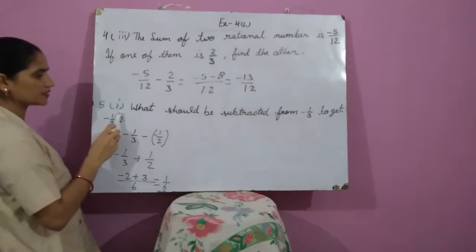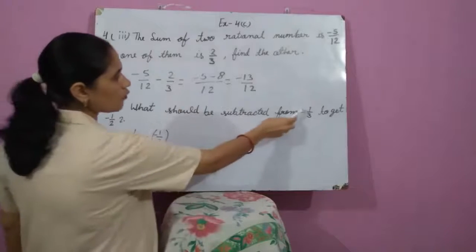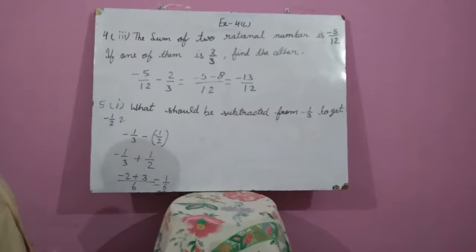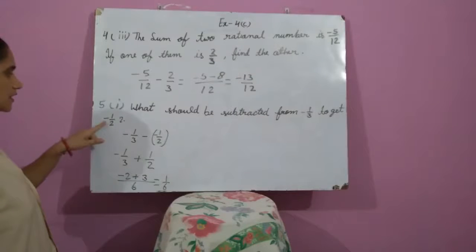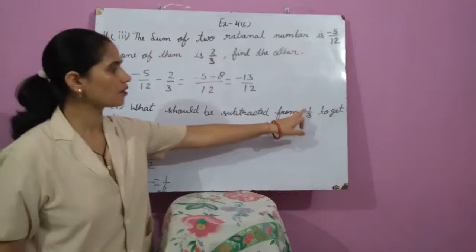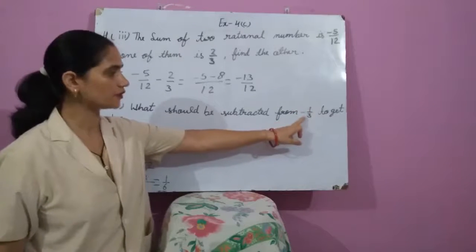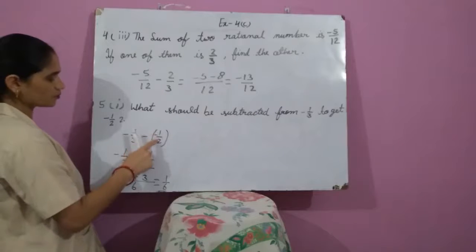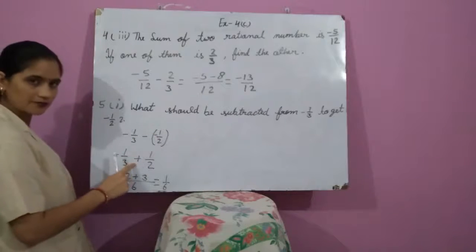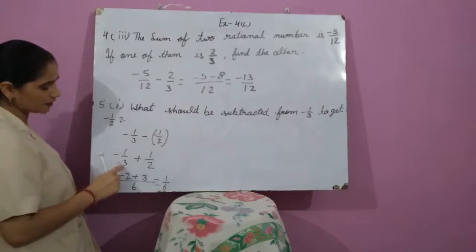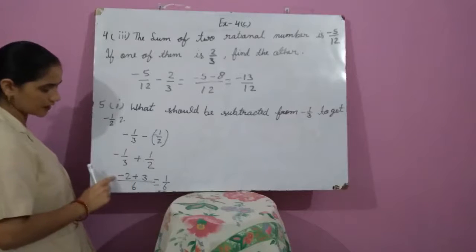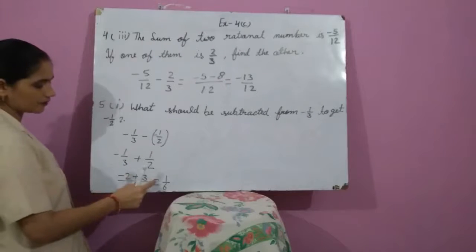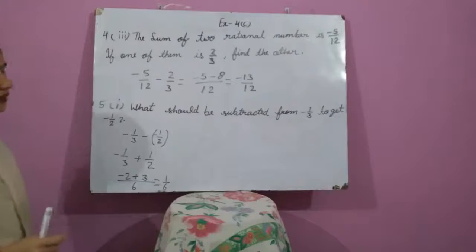Question number 5, first part: What should be subtracted from minus 1 upon 3 to get minus 1 upon 2? We subtract minus 1 upon 2 from minus 1 upon 3. So: minus 1 upon 3 minus (minus 1 upon 2); minus minus becomes plus. The LCM is 6. After calculation we are getting 1 upon 6. This is the required answer.